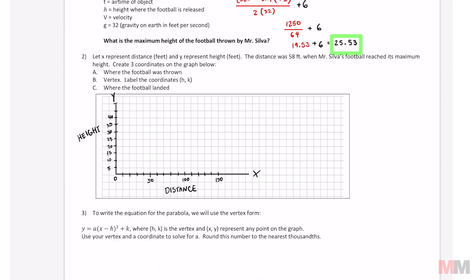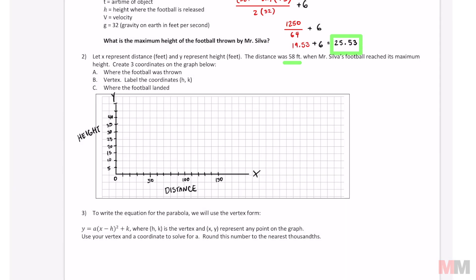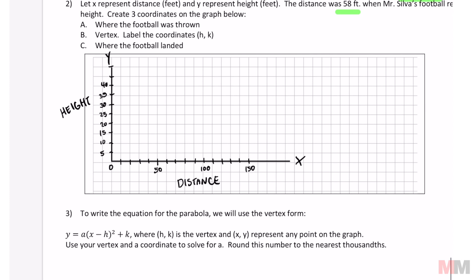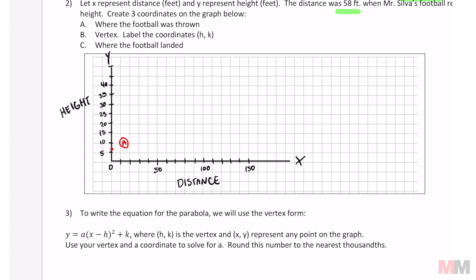For number 2 we're gonna graph the path of that football on a coordinate plane. Let x represent distance in feet and y represent the height also in feet. The distance was 58 feet when Mr. Silva's football reached its maximum height. Create three coordinates on the graph below. We're gonna start with A. The football was released at a 6-foot height. So not 0,0, right? We're gonna mark our first dot at 0,6. That is where the football was released.